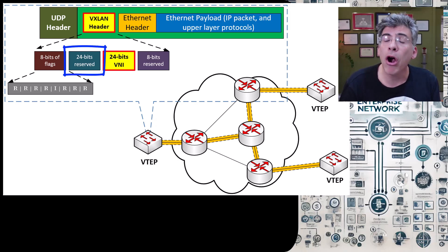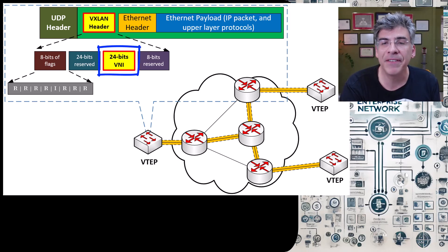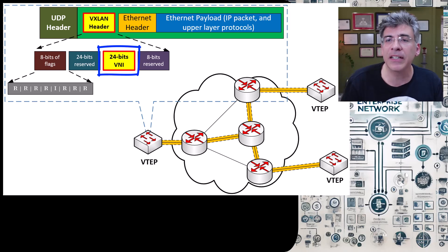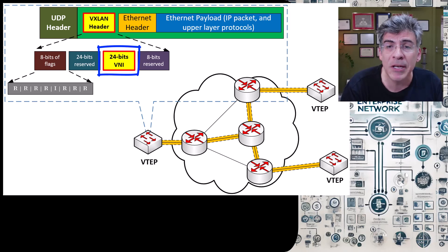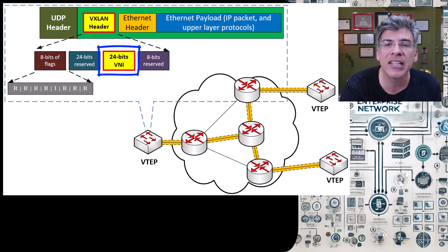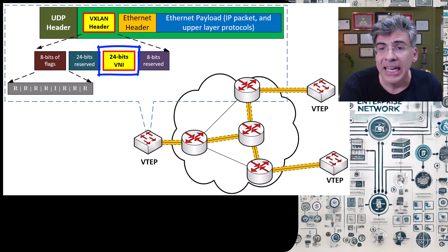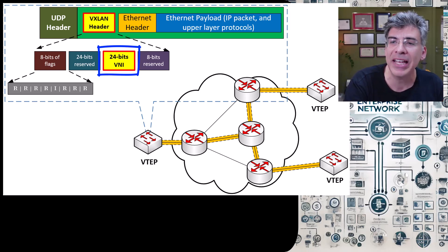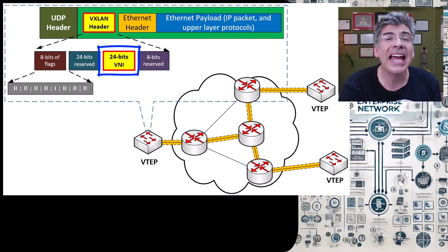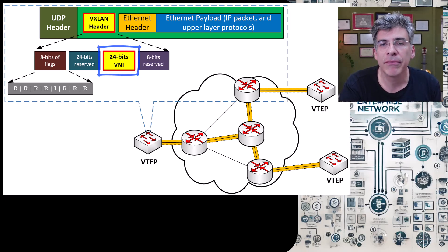The next 24 bits are also reserved for future use. Then we come to the VNI field itself, which is a 24-bit field — this is where the value of the VNI is stored. For the duration of the transmission of the frame over the VXLAN infrastructure, this is the field that tells the VTEPs to which VNI this frame belongs. It is added upon encapsulation at ingress on a VTEP, and it is read and removed upon egress of the destination VTEP.